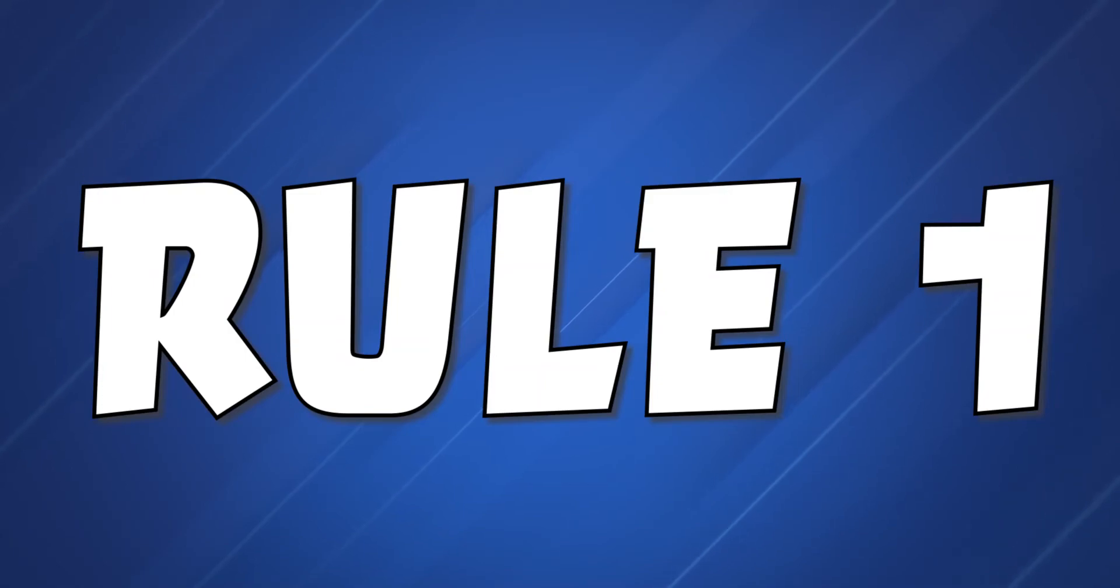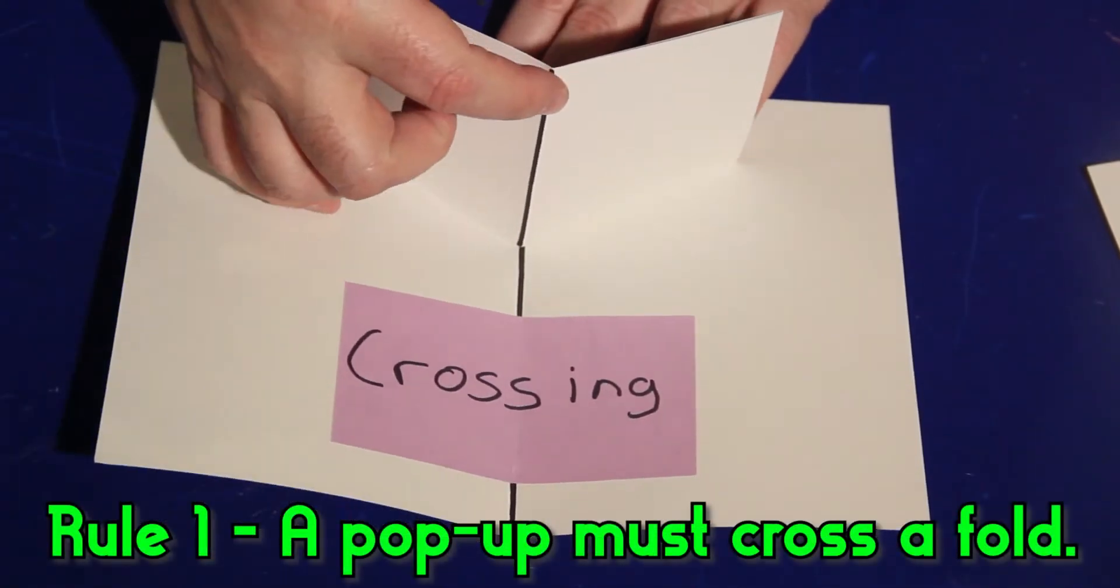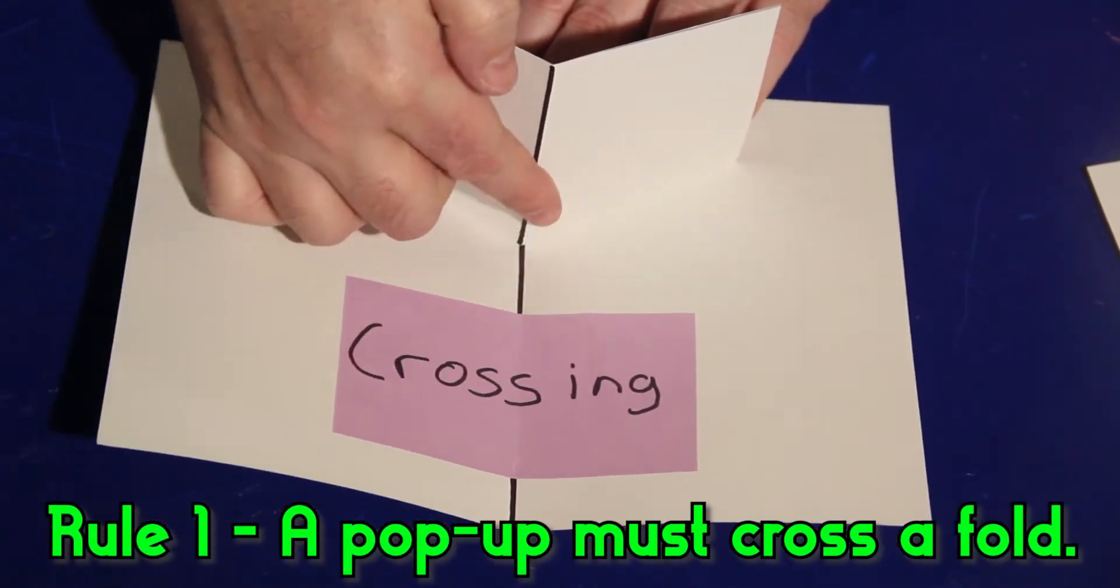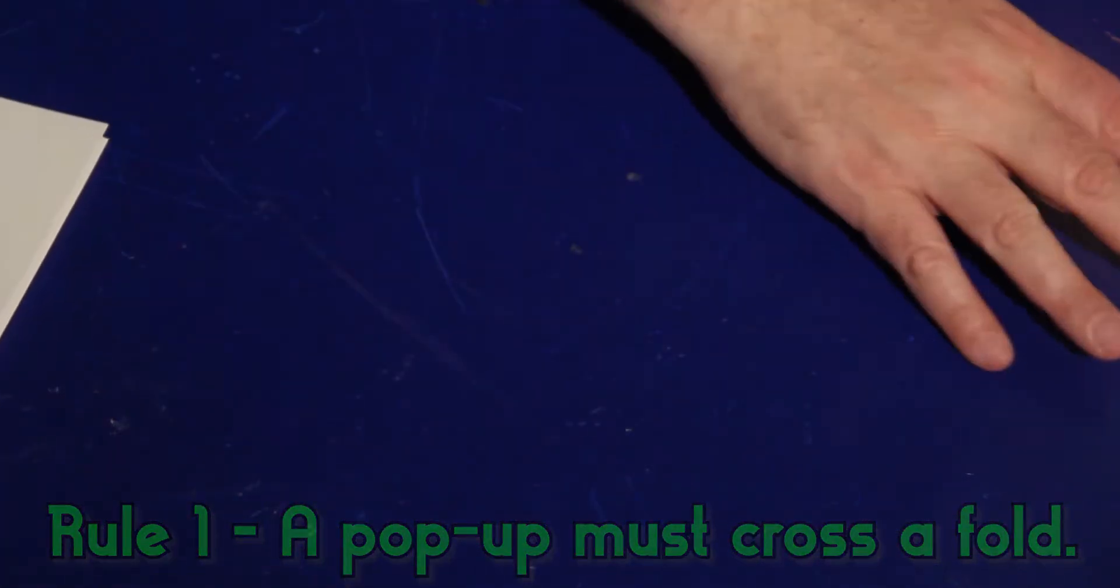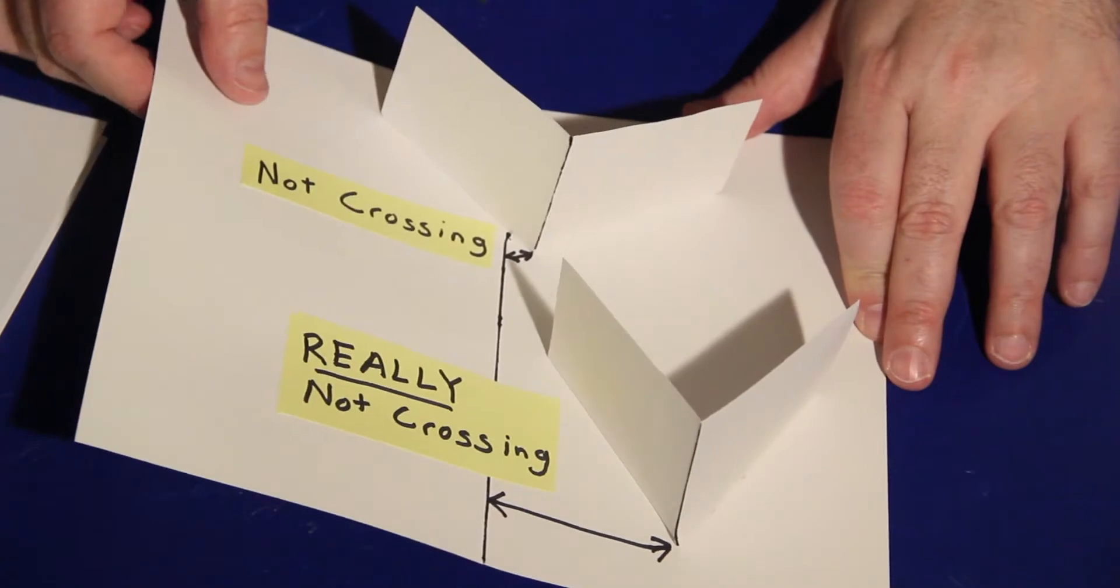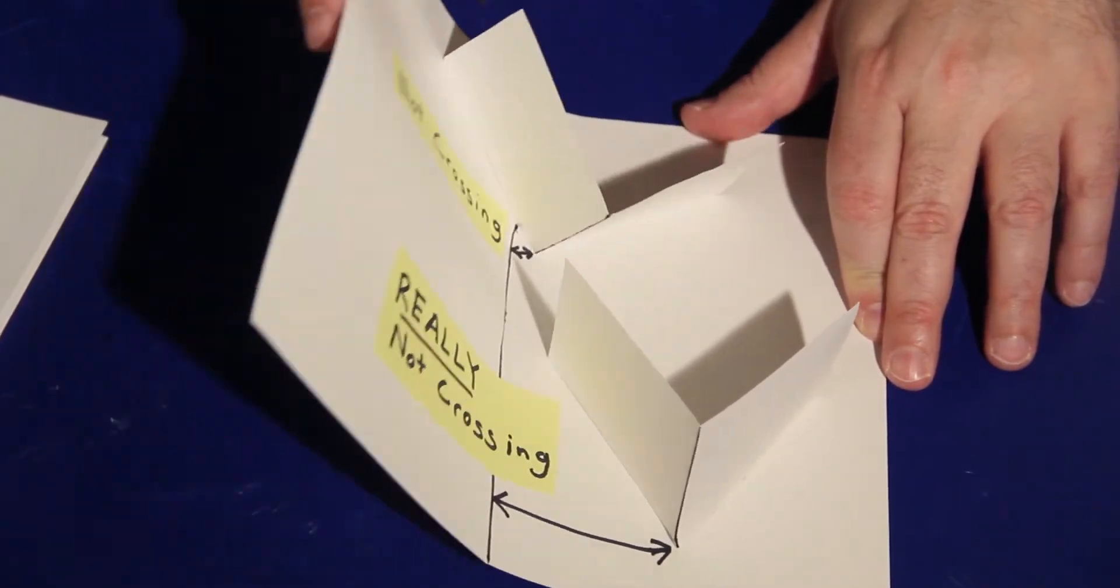Like I said, there are some rules to paper engineering, and we need to go over them before you start gluing down your V-Fold. Rule 1. First, a pop-up must cross a fold. When I close this properly placed V-Fold, the fold collapses flat. Here, I have a V-Fold off to the side of the centerfold. When I try to close it, it won't collapse.